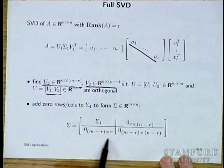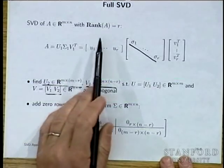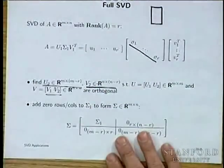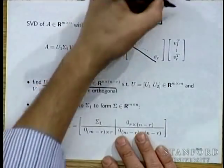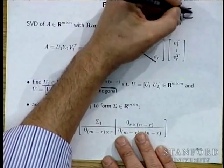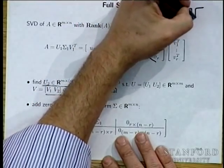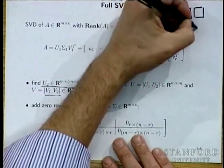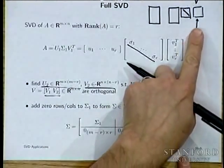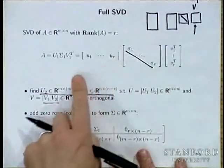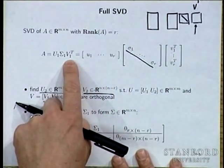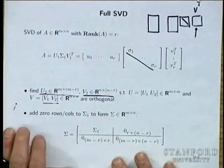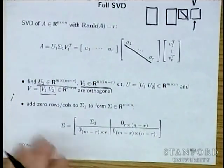In MATLAB, typing svd(A) returns the full SVD. If you want the compact version, you write something like svd(A,'econ'). This is important — for a matrix like 100×10,000, the full SVD returns V as a 10,000×10,000 matrix, which can cause serious storage problems. The economy SVD returns only a 100×100 U, 100×100 Σ, and 100,000×100 V.